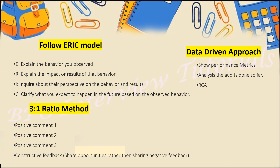Certain levels are also implemented in Six Sigma for sharing feedback. The first approach is the ERIC model. When sharing feedback, you: Explain the behavior you observed, explain the Result of that behavior, Inquire about the perspective behind the behavior and result, and Clarify what happened — checking if it will not impact performance in the future. This is one method you can implement when giving feedback. The second approach is the data-driven approach: if a person is not ready to accept feedback, check their previous data, identify if the same mistake was repeated, do RCA, and conduct side-by-side audits.